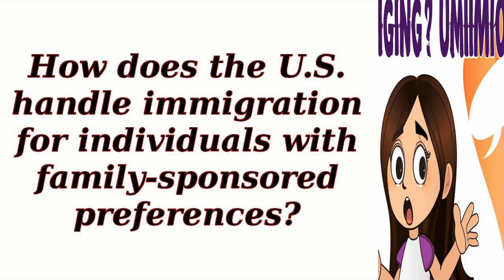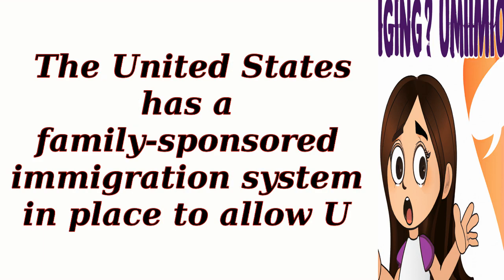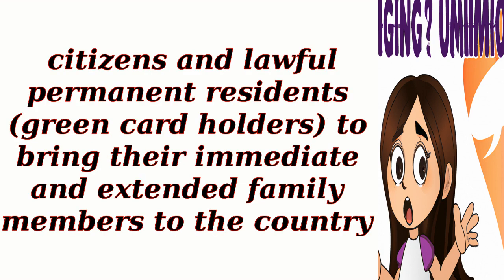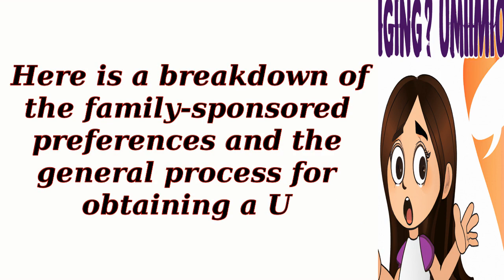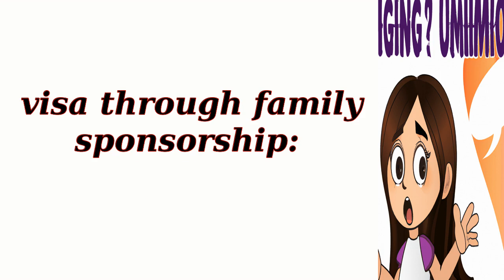How does the U.S. handle immigration for individuals with family-sponsored preferences? The United States has a family-sponsored immigration system in place to allow U.S. citizens and lawful permanent residents, green cardholders, to bring their immediate and extended family members to the country. Here is a breakdown of the family-sponsored preferences and the general process for obtaining a U.S. visa through family sponsorship.